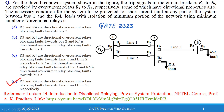This question was asked in GATE 2023 and belongs to power system protection. It is an important question based on the directional overcurrent relay. The question is: for the three-bus power system shown in the figure, trip signals to circuit breakers B1 to B9 are provided by overcurrent relays R1 to R9 respectively, some of which have directional properties. The necessary condition for the system to be protected for short circuit fault at any part between bus one and the RL loads, with isolation of minimum portion of the network using minimum number of directional relays, is — and four single-choice options are given.